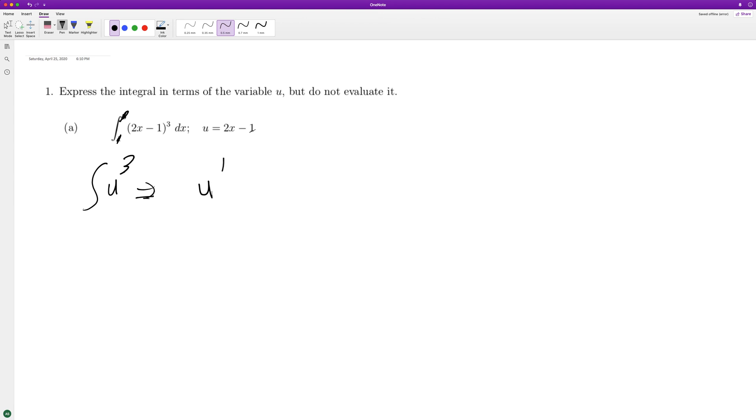So the integral in this case is just u raised to the 4th over 4. But we've got to be careful here because du is equal to 2. And if you notice, there's no 2 on the outside here. So to get du equal to dx, we need to multiply it by 1 half.